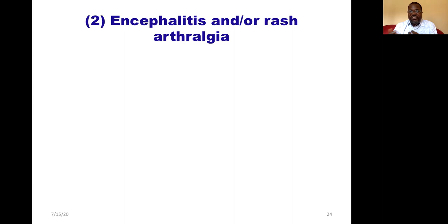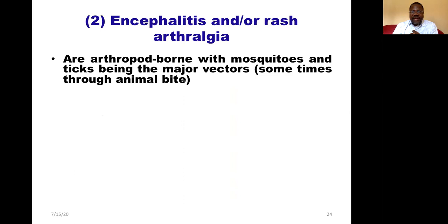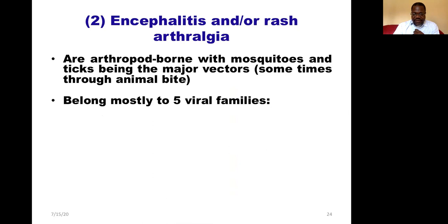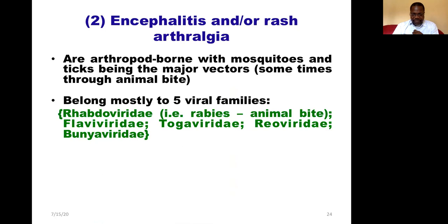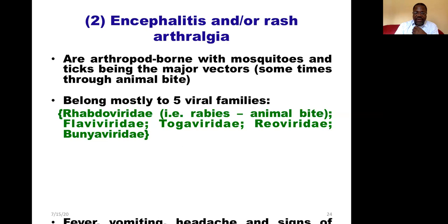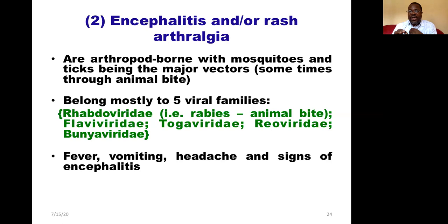The second group of viral zoonotic infections causes encephalitis with or without rash and arthralgia. These are arthropod-borne, with mosquitoes and ticks being the major vectors. There are five viral families involved: Rhabdoviridae, responsible for rabies transmitted via animal bites especially dog bites; Flaviviridae; Togaviridae; Reoviridae; and Bunyaviridae. If infected with those viruses, you can develop encephalitis.